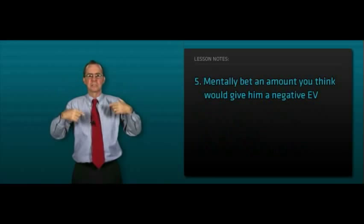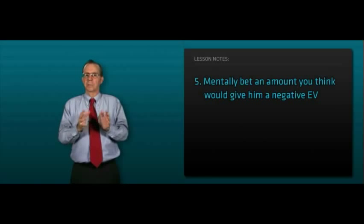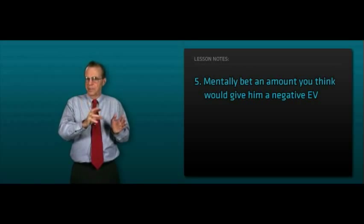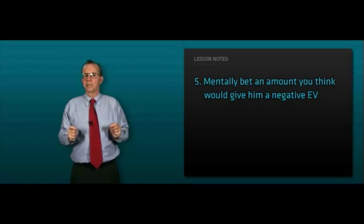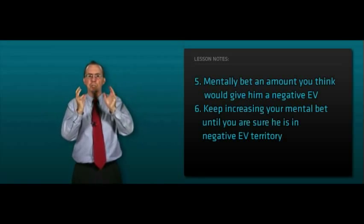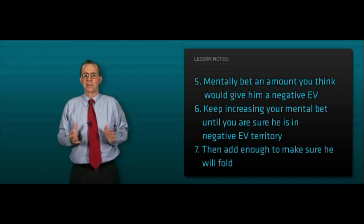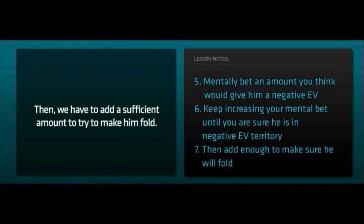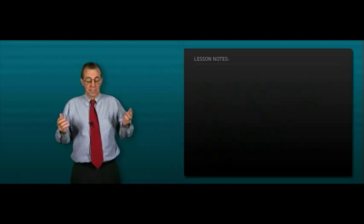Number five, and this is where it gets to be tough mentally, we're going to bet an amount which we think is going to give him a negative expected value. Then we have to keep increasing the mental bet until we're sure he's in negative expected value. Then we have to add a sufficient amount to try to make him fold.